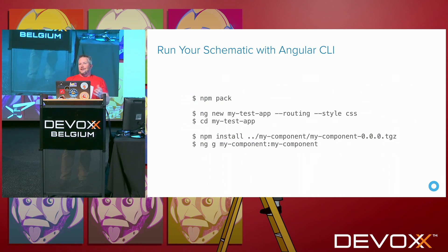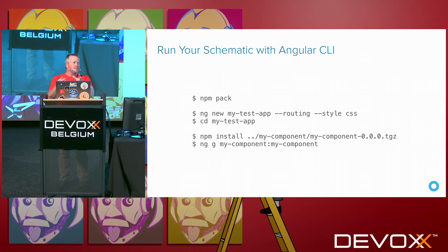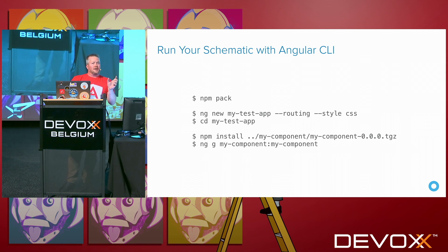Once your code and tests are working, you'll want to test your schematic in a real project. The best approach I found is npm pack, which creates a distribution tarball or zip file that acts just as if it's been deployed to npm. With npm link it reads files from where your project is, but that doesn't mean those files end up in your final distribution. So create a new Angular app with ng new, cd into it, npm install pointing to that packed file, and then run your schematic. You can use ng generate to run it as well.